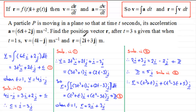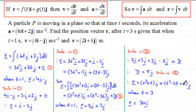The question asks for the position vector r after t equals 3 seconds. Substituting t equals 3: the i component is 3³ + 3 = 27 + 3 = 30. The j component is 3² minus 3(3) + 5 = 9 minus 9 + 5 = 5. So r equals 30i + 5j meters.